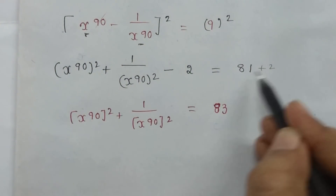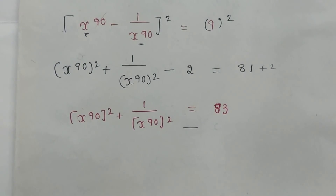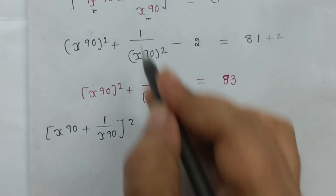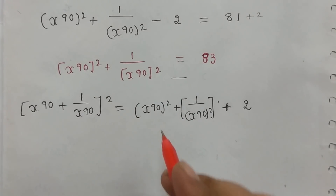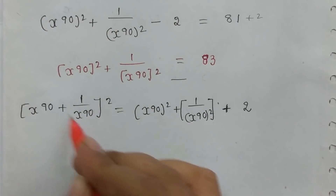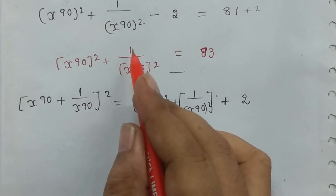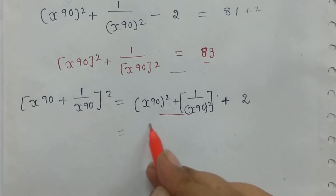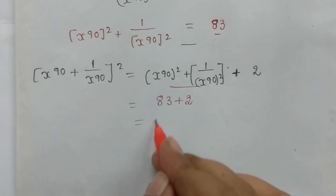So x^90 + 1/x^90 all squared — the value is 83 plus 2, equals 85. So x^90 + 1/x^90 all squared value is 85. We take the root, so root 85 is the answer.